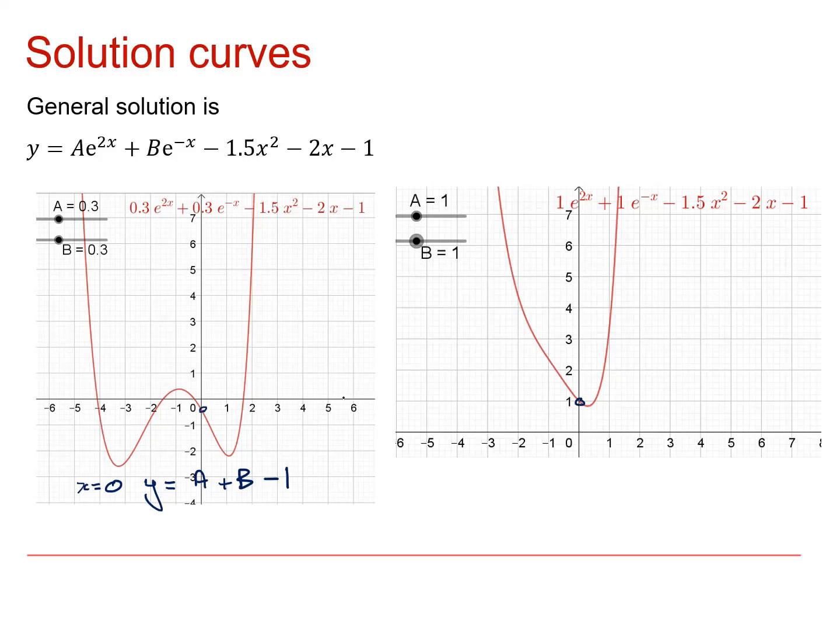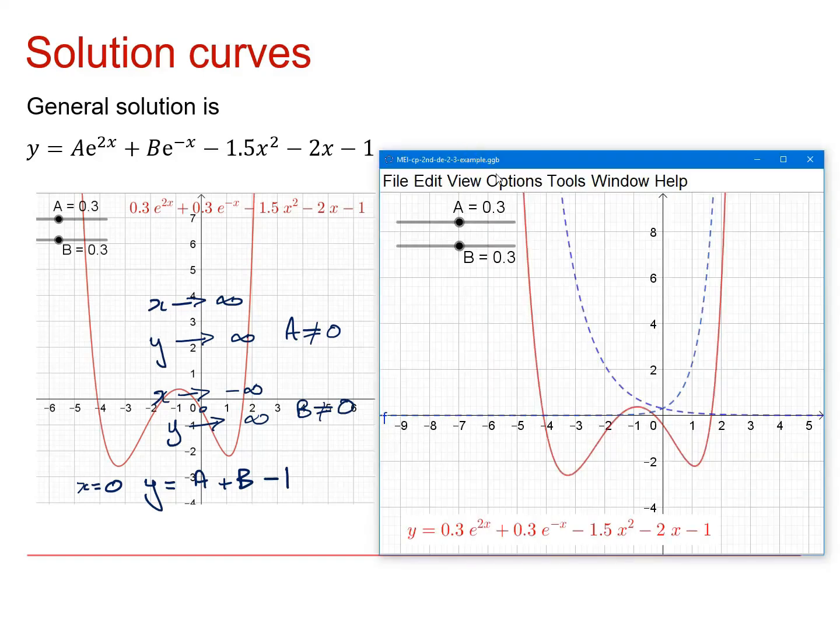Now the other thing to notice is what happens for behavior for large x. Provided A and B are non-zero, then for large positive x, as x tends to infinity, we're going to get that y tends to infinity provided A is not equal to 0. If A equals 0, we need to have another look at that. As x tends to minus infinity, y is also going to tend to infinity provided that B is not equal to 0. And again we'll have a look in a second at what happens as we change the parameters. So let's have a look at a dynamic plot for that.